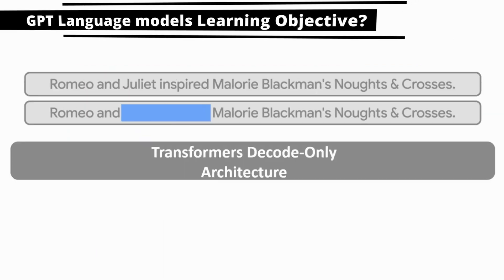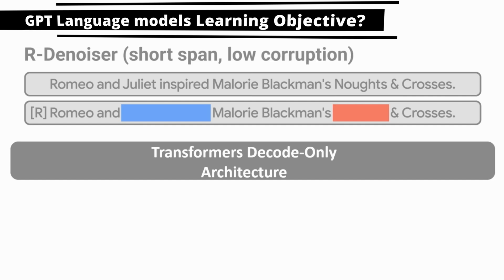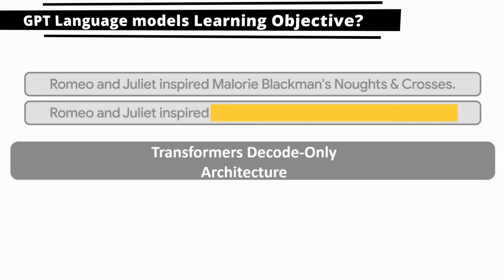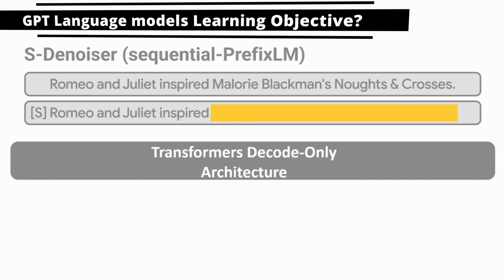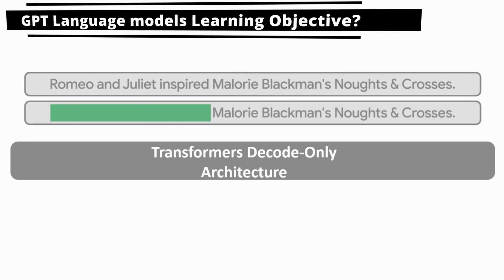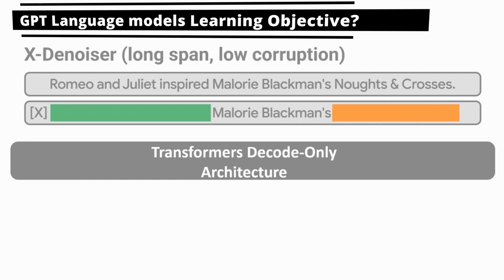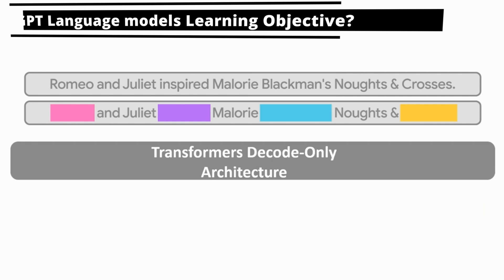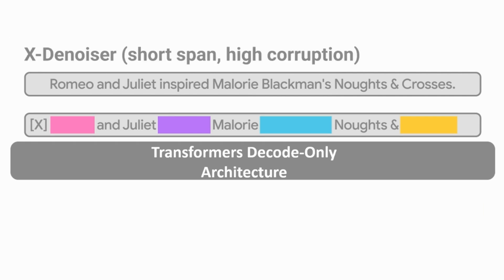GPT series language models use either autoregressive decoder only transformer architectures, where the model is trained to predict the next word for a given prefix phrase, or span corruption based encoder decoder architectures, where the training objective is to recover the subset of words masked out of the input.